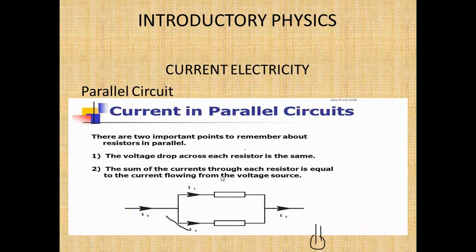Another important point: the sum of the currents through each resistor is equal to the current flowing from the voltage source. The current from the source equals the sum of the currents through each branch, which equals the current returning to the voltage source. These are very important concepts we will use for calculations.